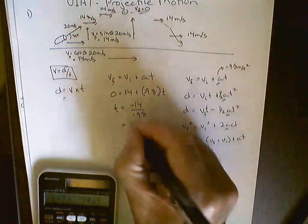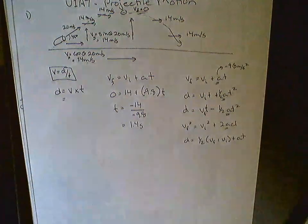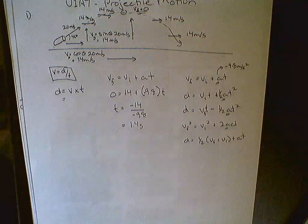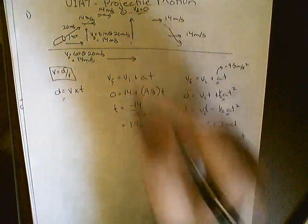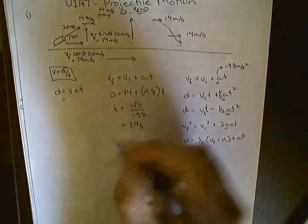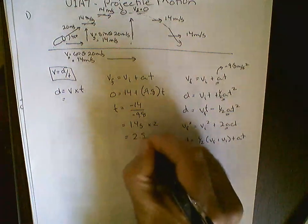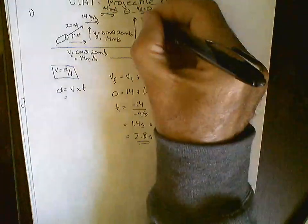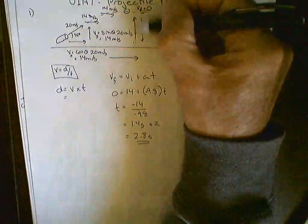That time is 1.4 seconds. This is a very important part of the video because what you have to realize is that 1.4 seconds is the time that it takes to get to the top. You must multiply that by 2 to find the time for the total trip because it comes back down, so it's 2.8 seconds for the total trip, 1.4 up, 1.4 down.